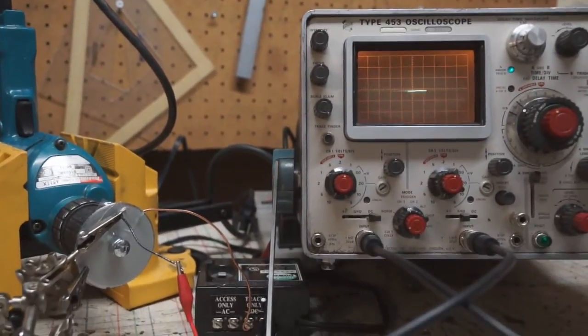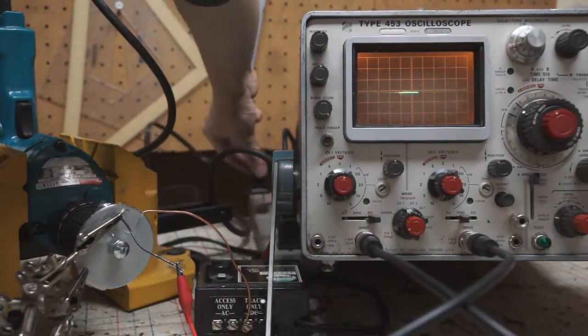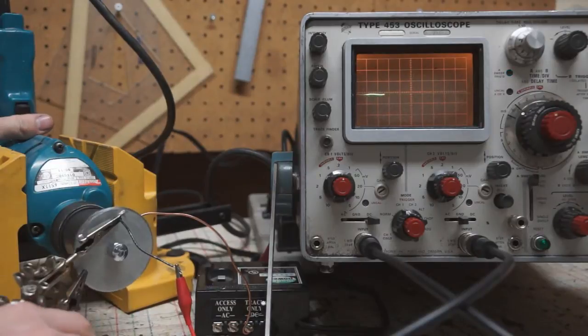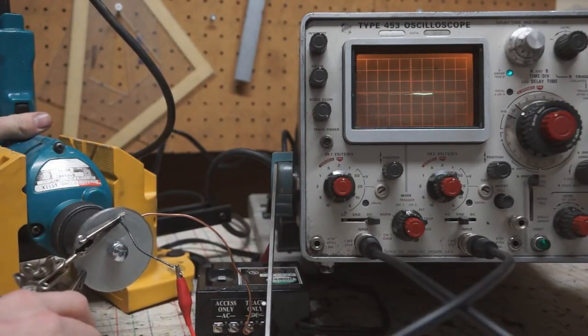When it's touching the masked off area that has tape on it, it will show as zero volts. As the disc spins, this will show as a series of pulses on the oscilloscope.